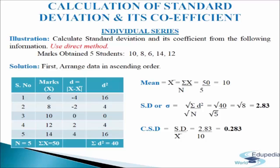In the fourth column we write d². So: (−4)² = 16, (−2)² = 4, 0² = 0, 2² = 4, 4² = 16. This gives σd² = 40.